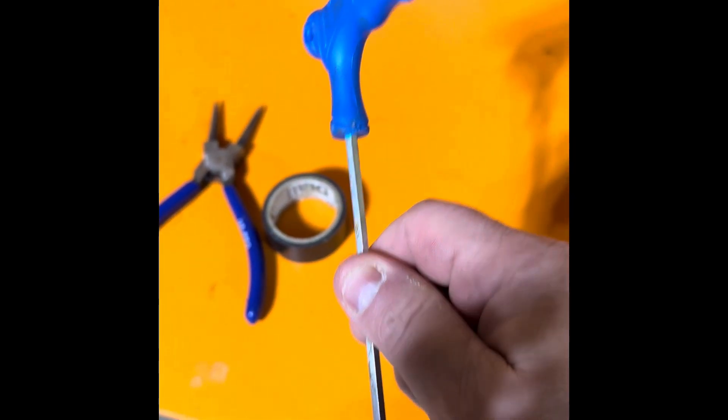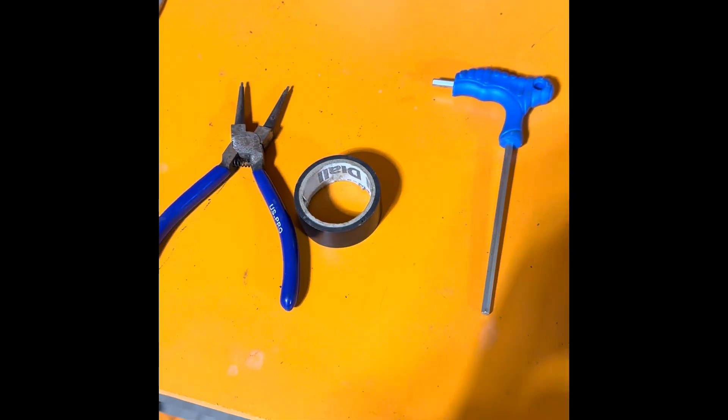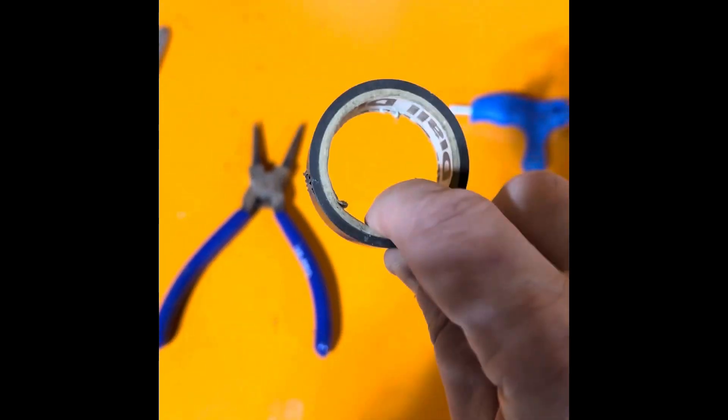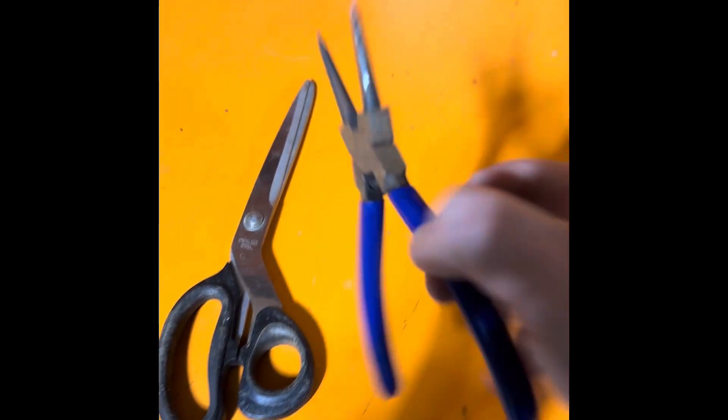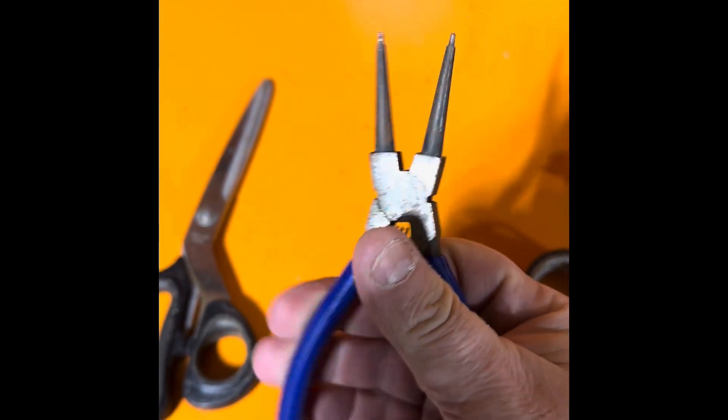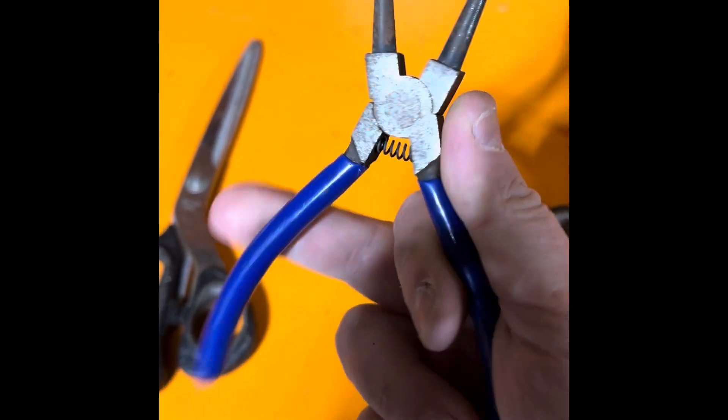Allen key for your seat post clamp, electrical tape, and circular pliers that are outspring. You see when I let go it springs outwards.